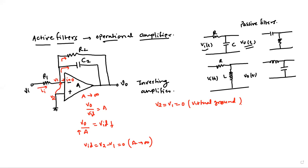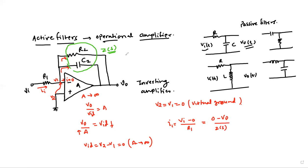The input current I1 is given as Vi minus zero divided by R1. That current equals the current passing through the feedback branch, which forms an impedance — a combination of R and C. Let's call it Z(s), where we are operating in the s-domain and s is the complex variable. We write zero minus Vo divided by Z(s), and Z(s) here is the parallel combination of resistor R2 and capacitor C2.